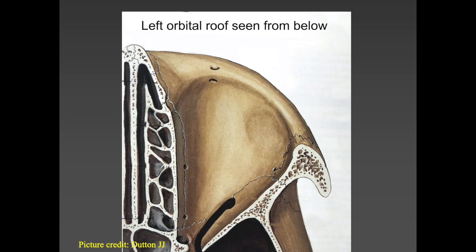Looking at each wall individually — this is the left orbital roof seen from below. You have the supraorbital foramen, the anterior and posterior ethmoidal foramina, and the lacrimal gland fossa superolaterally.